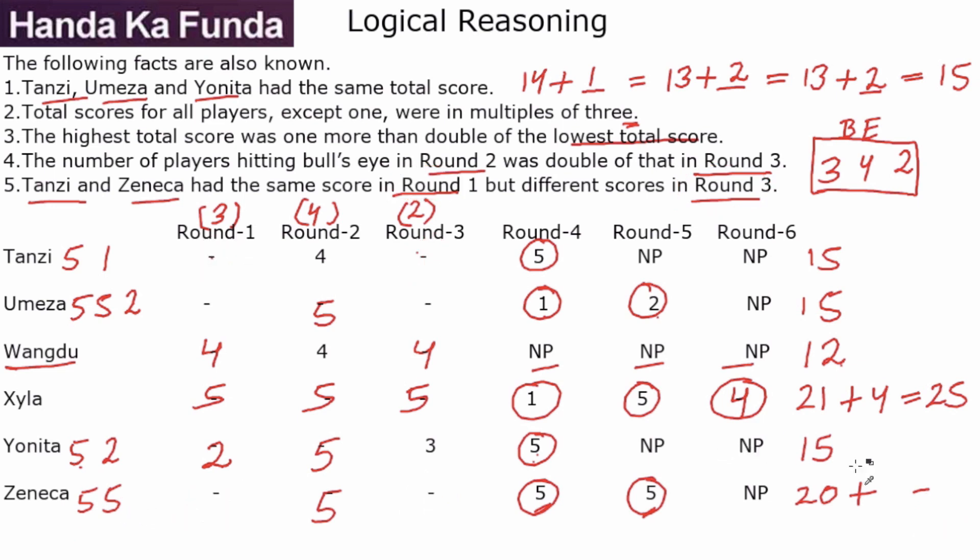So we rule that out. And if we rule that out, we know that Zeneca in the missing round scored 4, or Zeneca had a total of 24. So now we know Zeneca is 5-5-4. Let me put that in, 5-5-4. And for Tanzi, we have 5-1. So what does that mean? They have the same score in round 1 but they have different scores in round 3. That condition is being met. That will only happen when Zeneca has a total of 24. And now we needed 2 bull's eyes in the last round. We have only 1 bull's eye here. That means this missing one will be a bull's eye, and the missing score for Umeza is 2. And now I have my table complete.